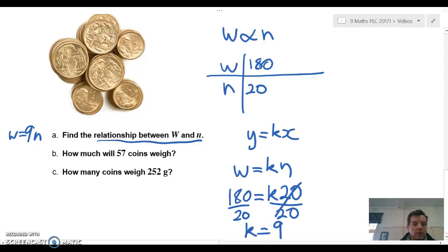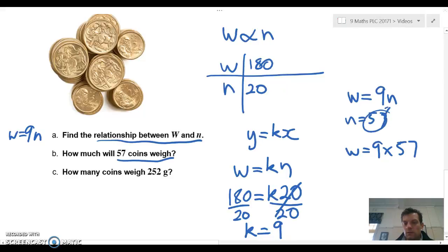So now when we're asked to find how much 57 coins weigh, we can use our rule we've created, w equals 9n, where n is 57 coins, so n equals 57. So w equals 9 times 57. All I've done there is substitute this 57 value in for n.